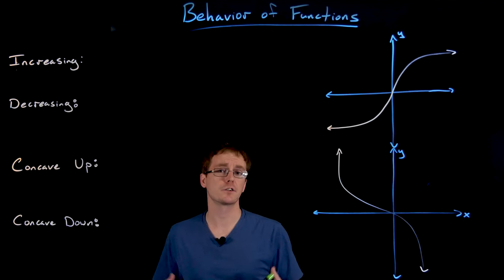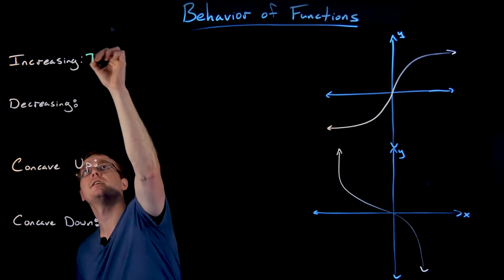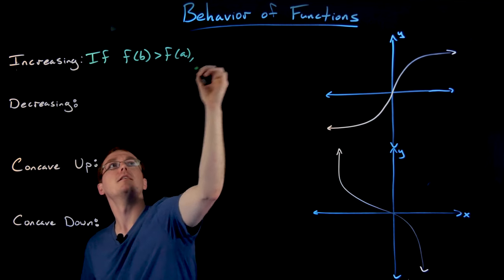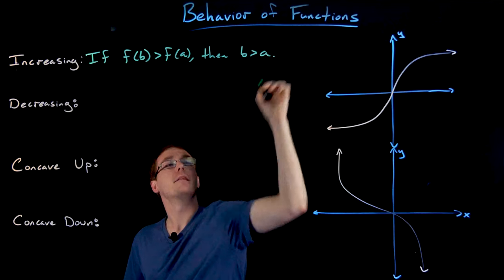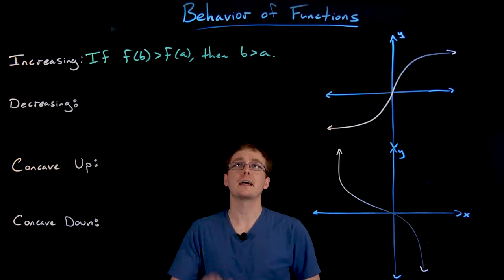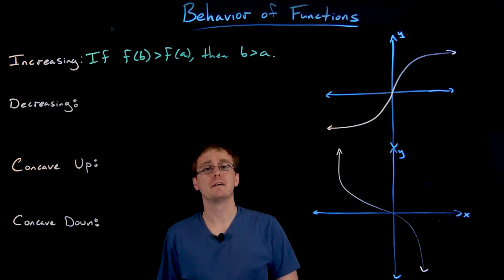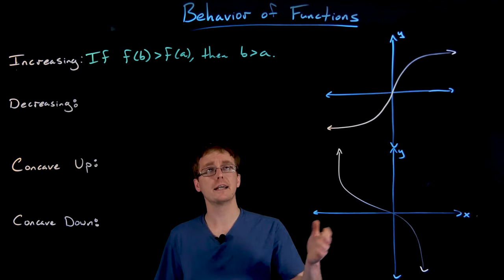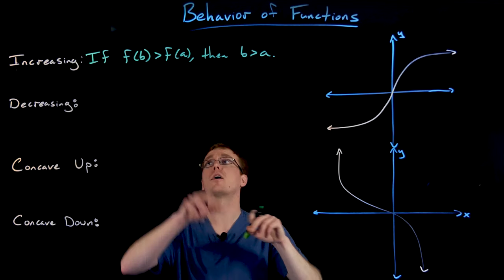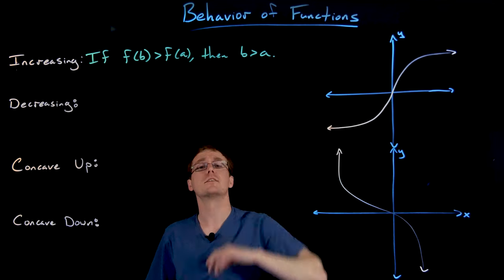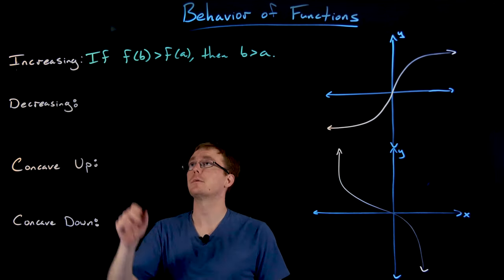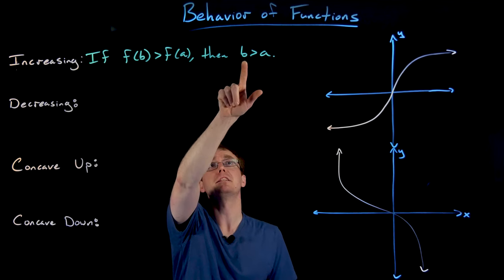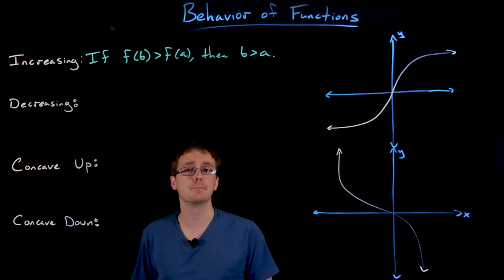Suppose the function is y equals f of x. A function is increasing if f of b is greater than f of a, and that implies the input value b must be larger than the input value a. This is our algebraic way of saying: as we move from left to right, as x values get bigger, the outputs also have to get bigger. Another way to interpret this: if our outputs are getting bigger — f of b is bigger than f of a — then b must be bigger than a.